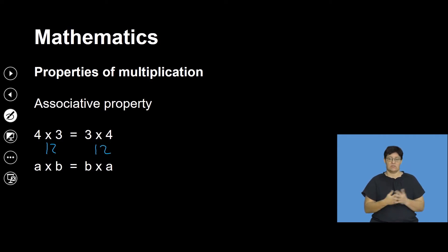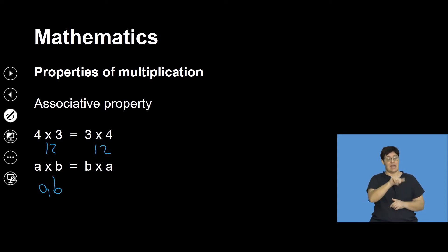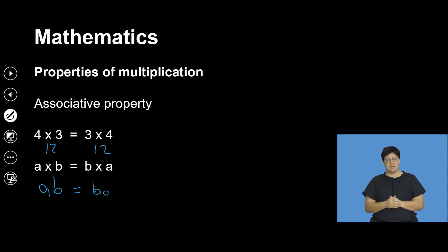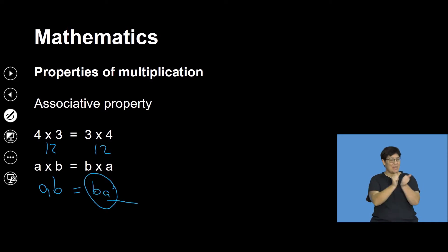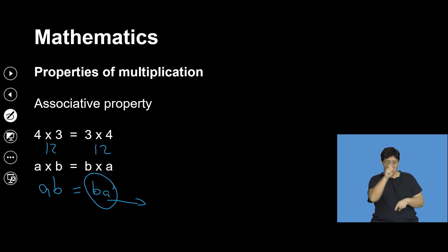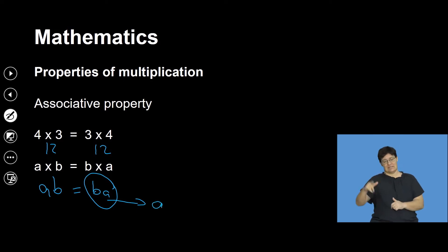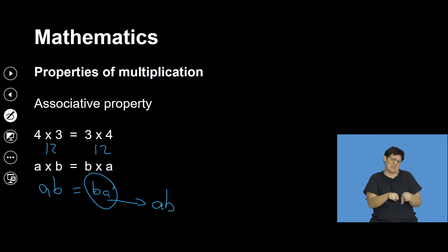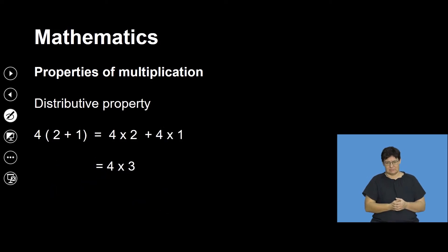Similarly, A multiplied by B — we write it as AB — equals B multiplied by A, which is BA. But mathematically, when writing a term that has variables, we normally follow alphabetical order. Hence, this is supposed to be AB, which is the same as the left-hand side.